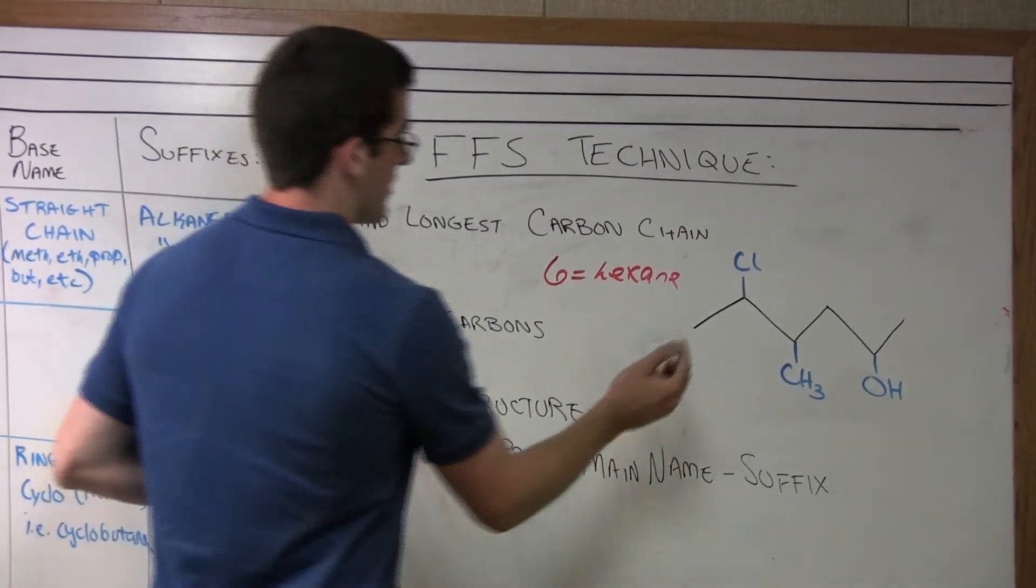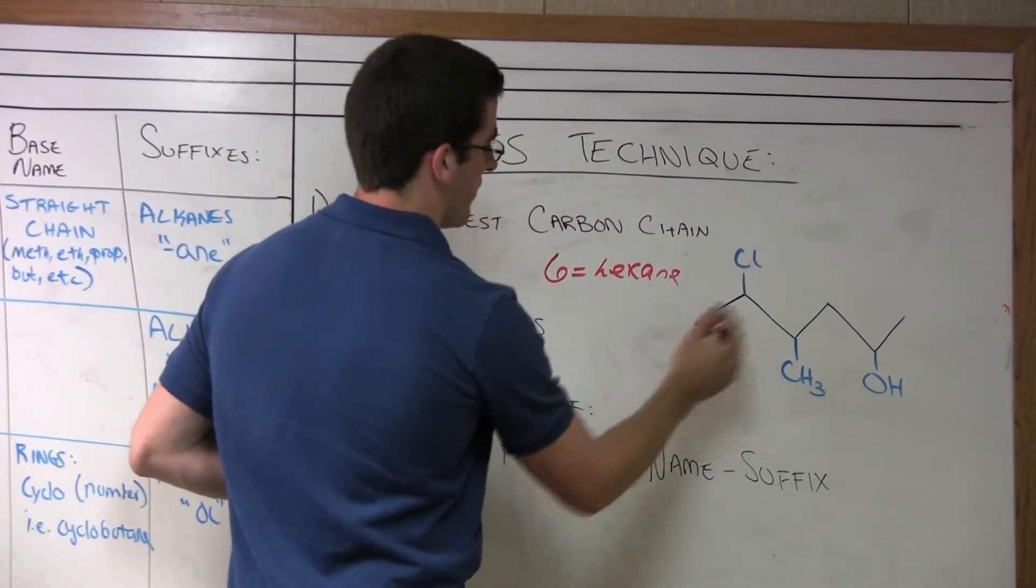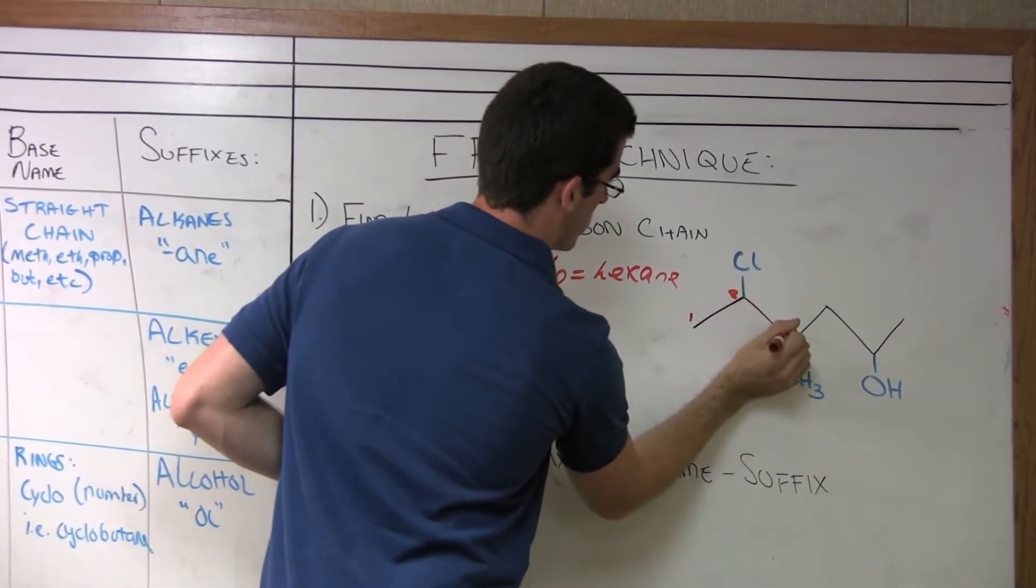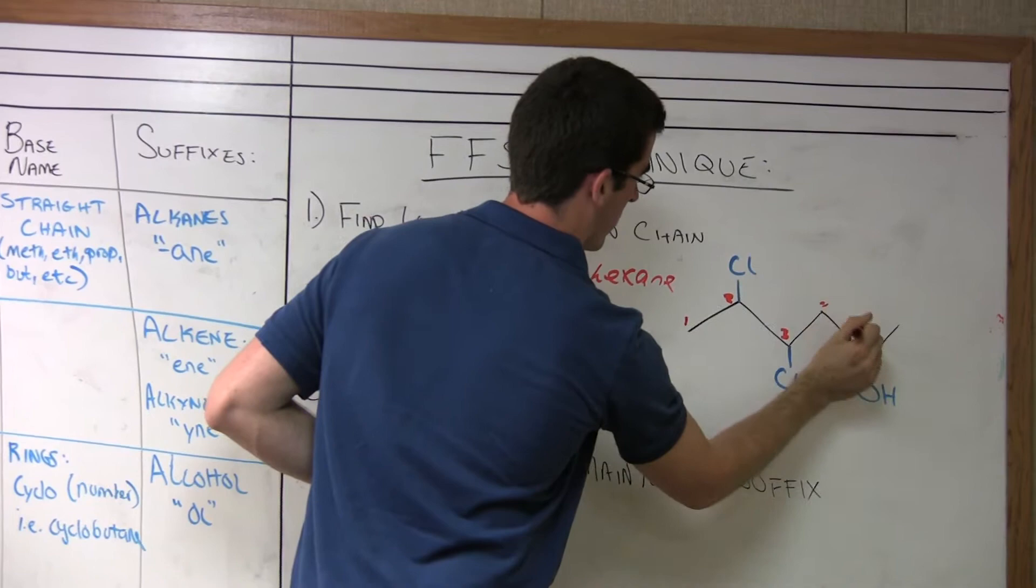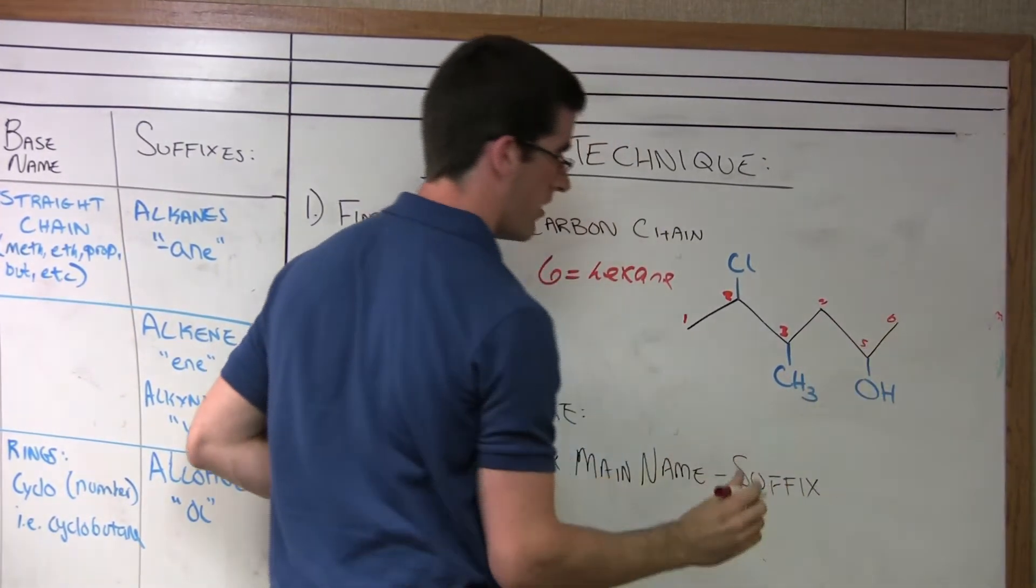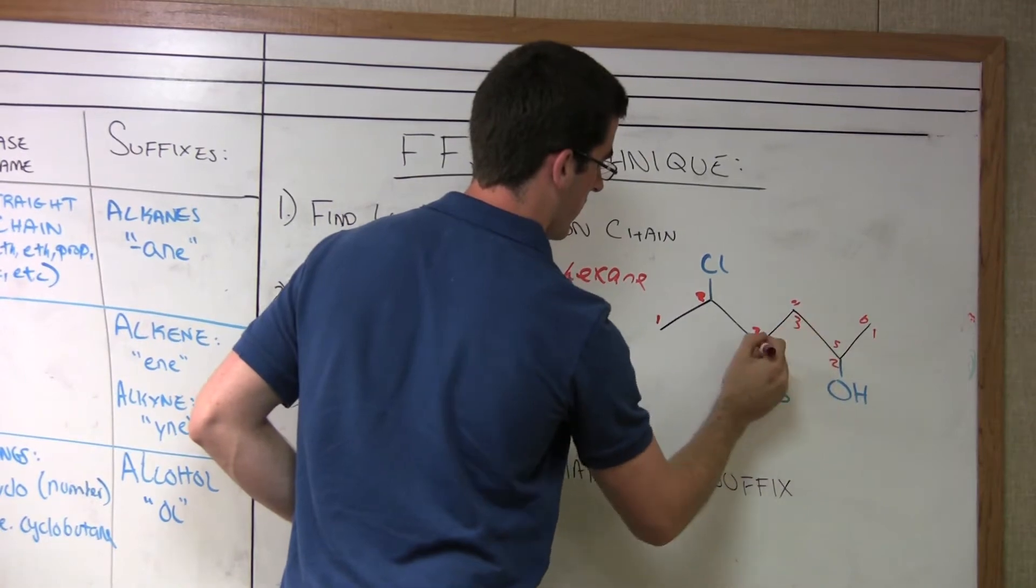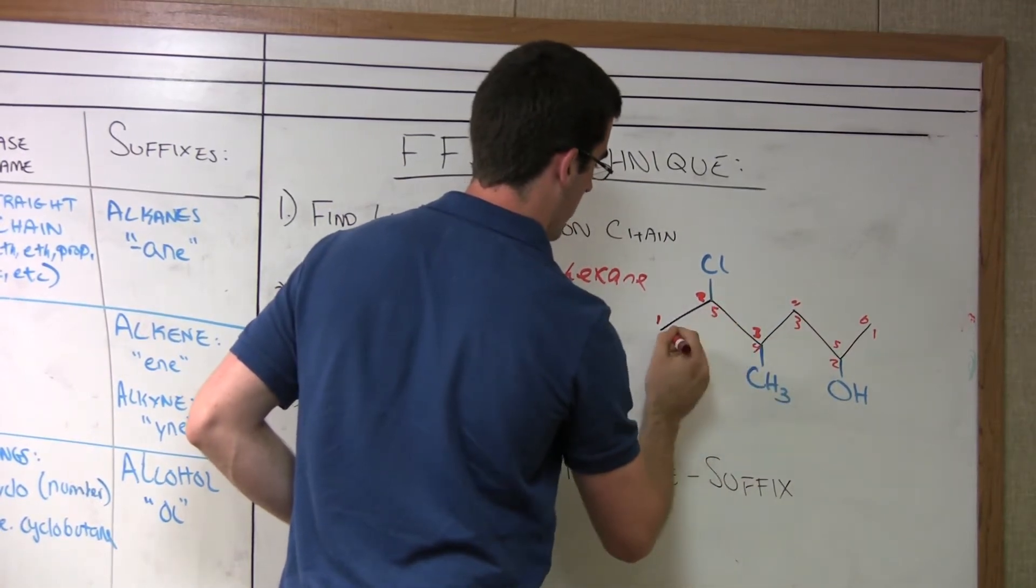So we can do this two ways. We can number from left to right, or from right to left. So numbering from left to right, we put one, two, three, four, five, six there. Or we can go from right to left, one, two, three, four, five, six.